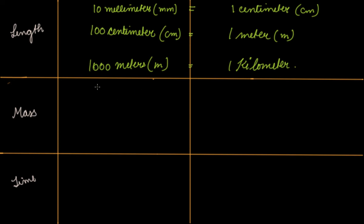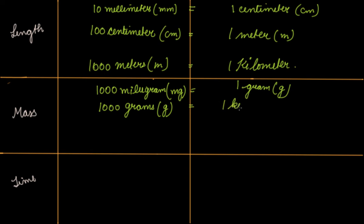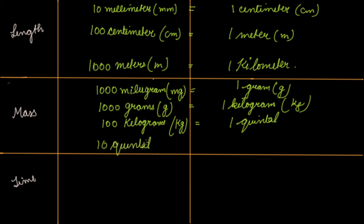Then comes the mass. 1,000 milligrams, that is mg, is equal to 1 gram. Then 1,000 grams is equal to 1 kilogram. Then your 100 kilograms, kg, is equal to 1 quintal. Then your 10 quintal is equal to 1 metric ton.